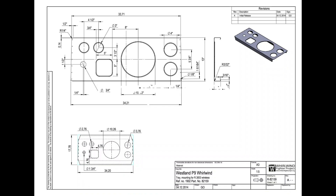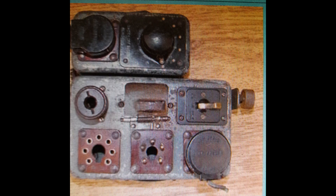Immediately to the aft of the radio compartment, a large transverse platform carried the R3003 identification friend or foe equipment and the de-icing tanks for the port and starboard propellers.